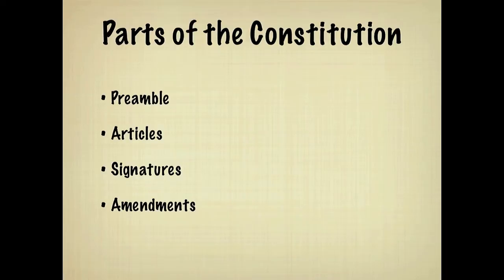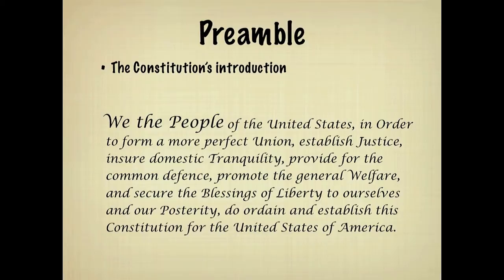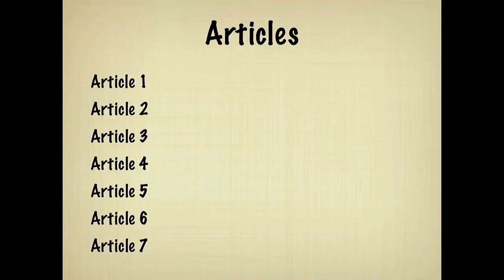The preamble is the introduction to the Constitution. It starts with the phrase 'We the People,' and goes on to explain the reason for the Constitution. After the preamble, there are 7 articles. I'll give a quick summary of each article, and more information will appear on the screen. Pause the video to examine the information.